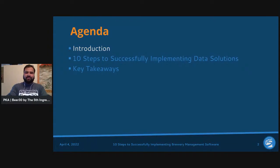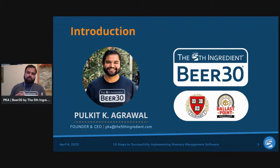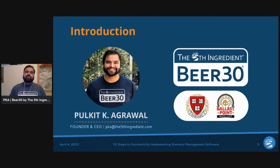My background is that I studied mechanical engineering at Harvard University, then was recruited to work at Ballast Point Brewing in San Diego as a process engineer. I focused on packaging equipment — specifically bottling, canning, and kegging — helping them launch nitrogen beer in bottles and kegs and expand into Virginia.